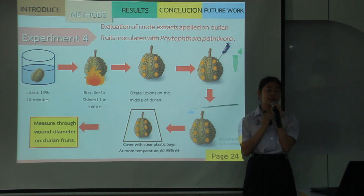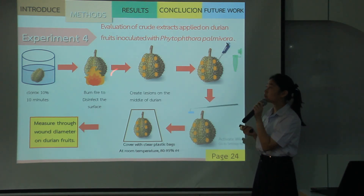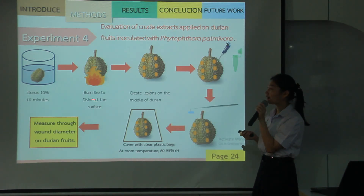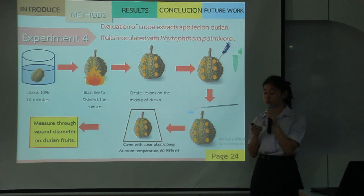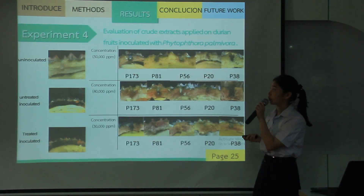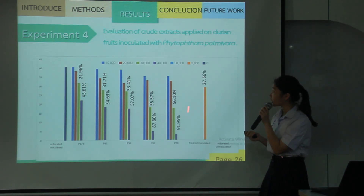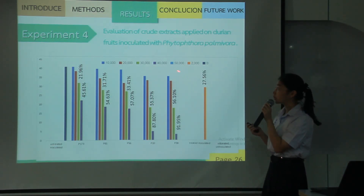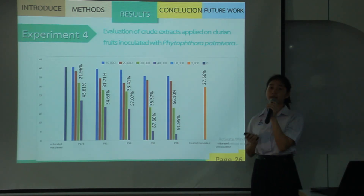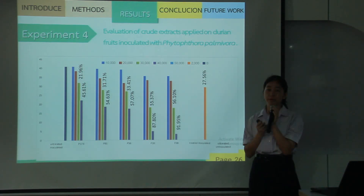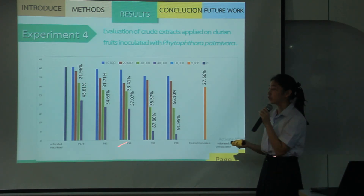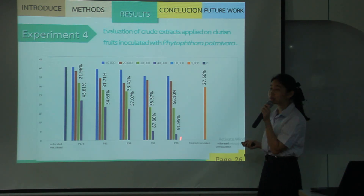Experiment 4: evaluation of extract applied on durian fruit inoculated with Phytophthora palmivora. This step is done similarly to the chili, but I have to use flame surface disinfection because on the durian skin there is a lot of contamination. This is the picture of results. From the graph, at 50,000 ppm every substance can completely inhibit lesion development. P38 is the extract that can inhibit up to 91.95%.